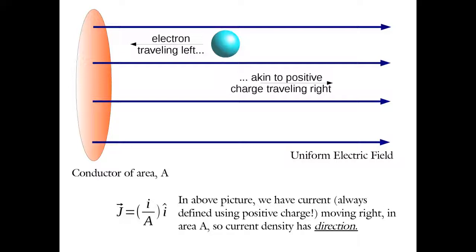Everything is done in terms of positive charge when defining directions in a circuit. Microscopically, if we imagined for a moment that the electrons were standing still but the atoms are moving — that's kind of what Ben Franklin has stuck us with. It's really the electrons that are moving, but they're moving opposite the direction of positive current flow. Positive current flows that way if electrons are flowing that way. These are conventions we are hindered with by the history of our field.